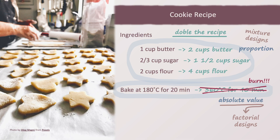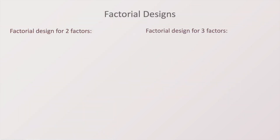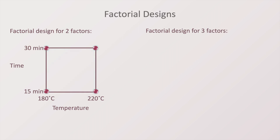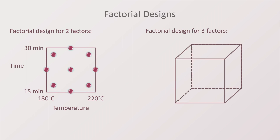But what is the main difference between them? In a factorial design for two factors, the variables can assume any combination of factor levels, and the treatments can be represented using a square. Using the cookie recipe example, let's imagine we tested temperature between 180 and 220 degrees and time between 15 and 30 minutes. We can test any combination of these factor levels, following a standard factorial design where the treatments correspond to the vertices of a square. We can add central points, or even use a central composite design. A factorial design for three factors can be represented in a cube, and the treatments can assume any combination of factor levels on the surface or inside the cube.